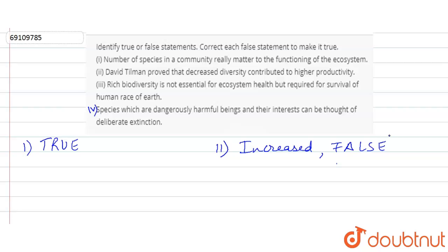Third, the statement says that rich biodiversity is not essential for ecosystem health, but is required for the survival of the human race on Earth. This is a false statement. Rich biodiversity is very essential for ecosystem health. If rich biodiversity supports a healthy ecosystem, it becomes a stable ecosystem with positive interactions. So it is very important that rich biodiversity should exist.